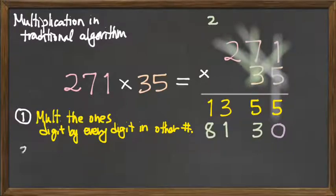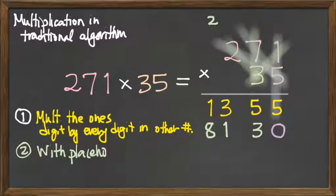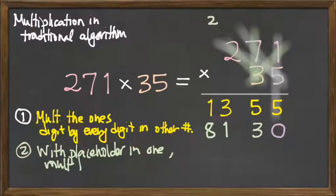So my second step was with a placeholder in the ones place, multiply the tens digit by every other digit.